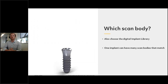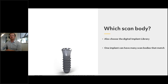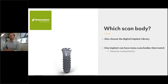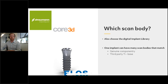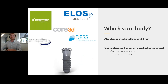A question we often get asked is: which scan body should I use? This also affects which implant library you're going to choose. For a single Straumann implant, one option is to use genuine componentry — Straumann implant with a Straumann scan body and Straumann tie base. Another option is to use a third-party tie base: Core3D, ELOS Medtech, NT Trading, and DES all provide scan bodies for their respective tie bases.